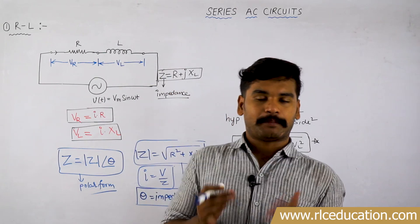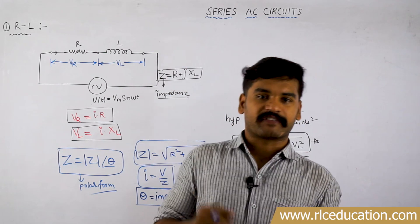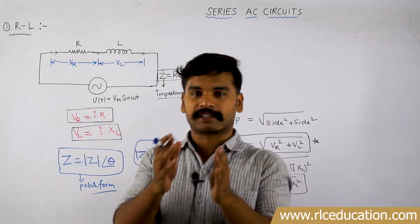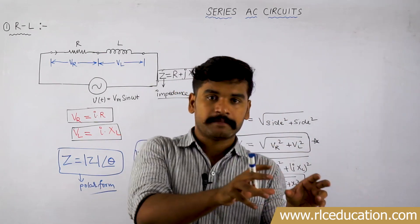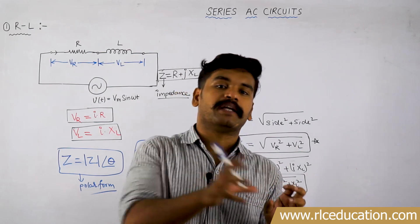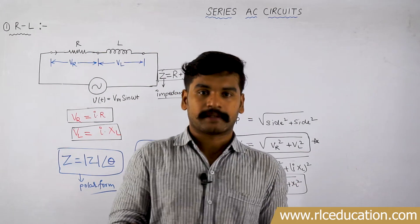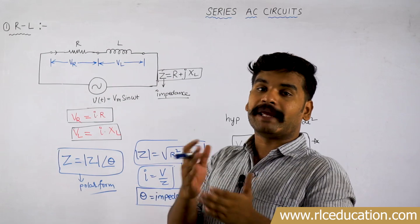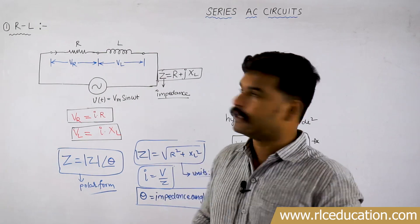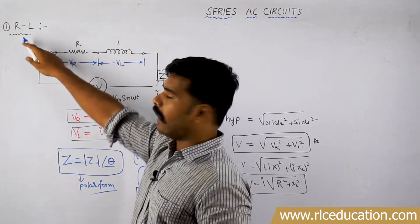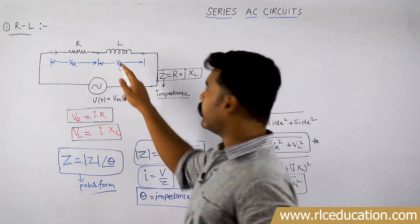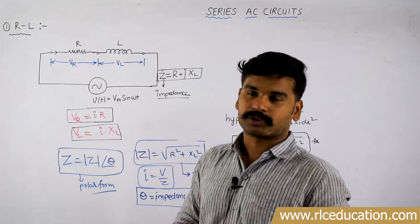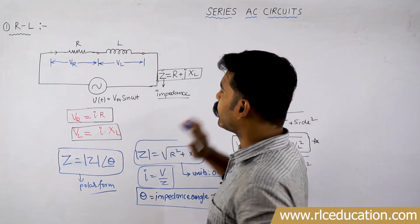Hey guys, this is Nikhil. Up to the last class we have seen how resistor, inductor, and capacitor individually behave when kept in an AC source. Now what I am going to do is make a series combination of these elements. The first combination is RL — a resistor and inductor placed in series and connected to an AC source. Therefore it is called a series AC circuit.